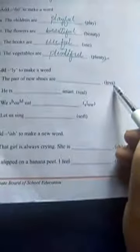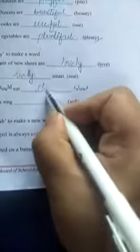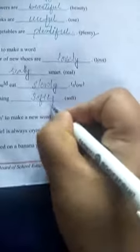Add 'ly' to make a word. The pair of new shoes are lovely. He is really smart. We should eat slowly. Let us sing softly. The pair of new shoes are lovely, he is really smart, we should eat slowly, let us sing softly.